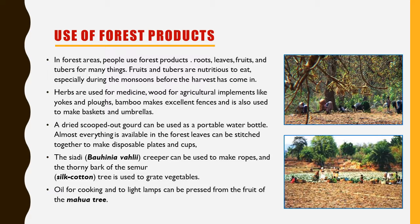Villagers and tribes were totally dependent on forest products. In the forest areas, people used roots, leaves, fruits, and tubers for many purposes. Fruits and tubers are nutritious to eat, especially during the monsoons before the harvest. Herbs are used for medicines. Wood is used for agricultural implements like yokes and ploughs. Bamboo makes excellent fences and is used to make baskets and umbrellas. A dried scooped-out gourd can be used as a portable water bottle. Leaves can be stitched together to make disposable plates and cups. Almost everything is available in the forest.